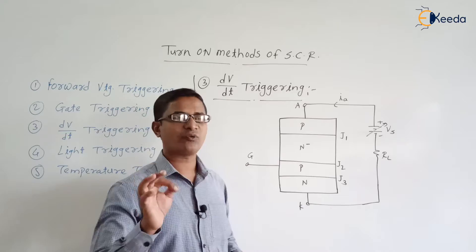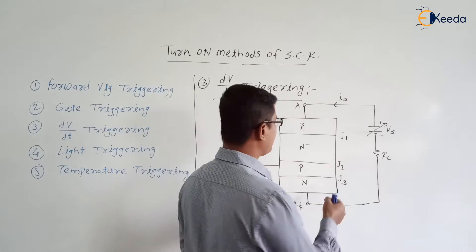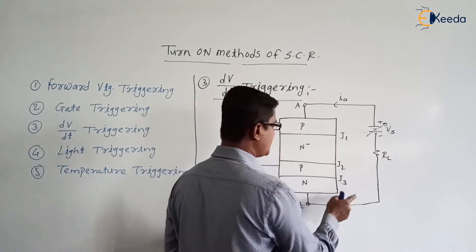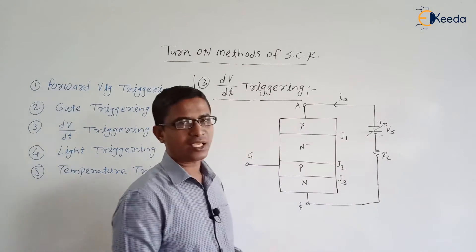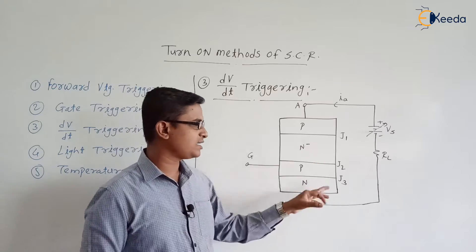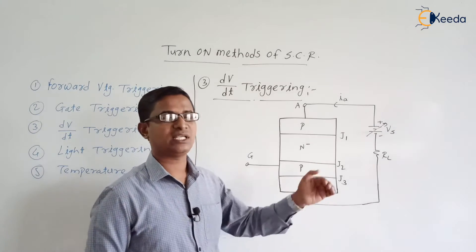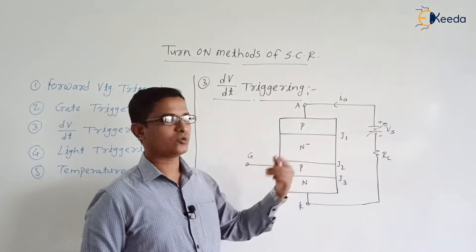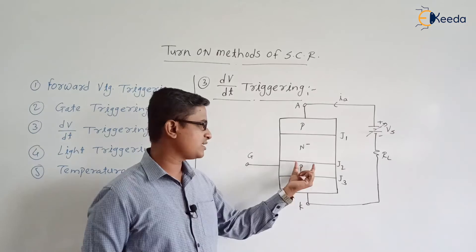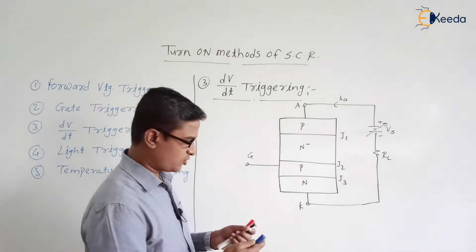So the mode of operation will be forward blocking mode. We are having three junctions J1, J2, J3. Out of that, junction J1 and J3 will be in the forward bias mode because SCR is in the forward bias mode. And junction J2 will be in the reverse bias mode.